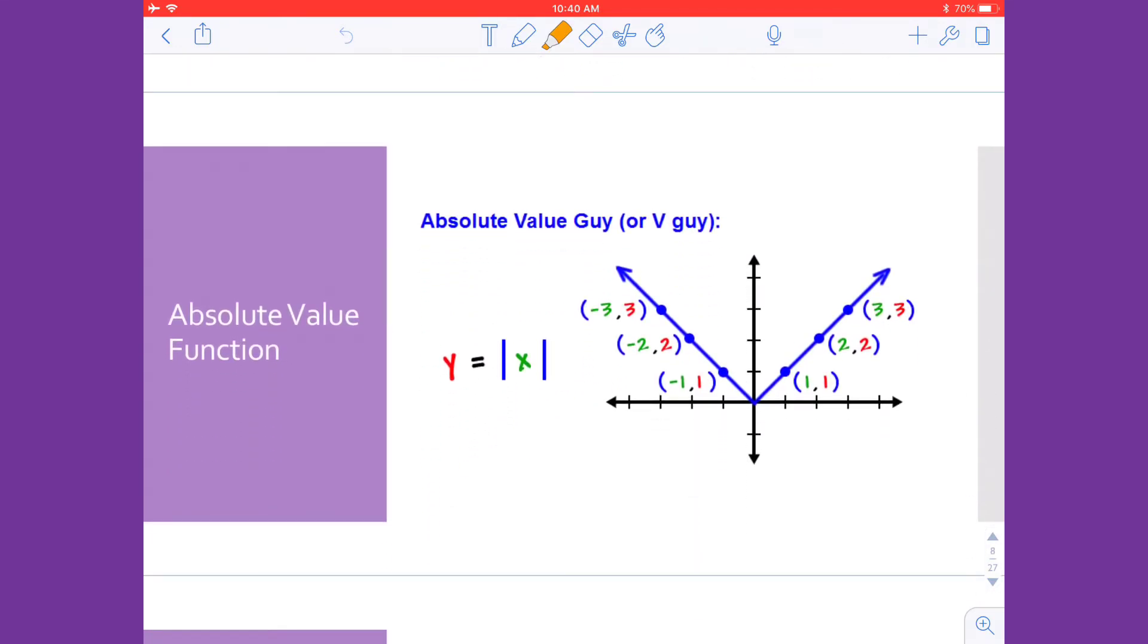The next graph is absolute value function. I remember this as v for value, so its shape is a v. It is also symmetrical, meaning if I were to cut this down the middle I'd have the same thing on the left and the right. It too passes through the origin and its equation is y equals absolute value of x.